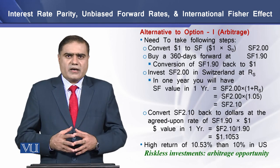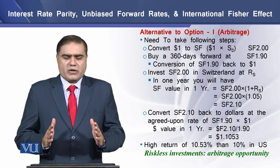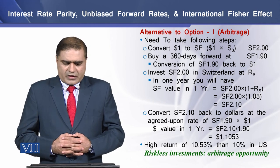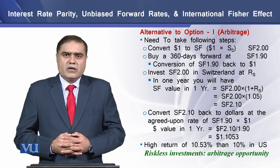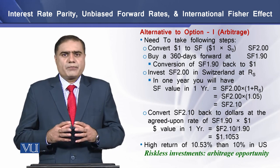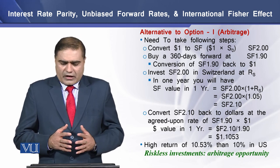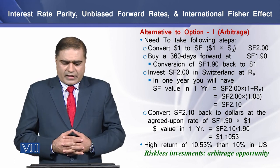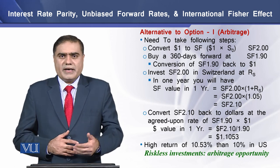As a second alternative, we have an arbitrage opportunity. Let's see how this arbitrage process works. First, we convert $1 into Swiss francs at the spot rate of 2, giving us 2 Swiss francs. At the same time, we enter into a forward contract of 360 days at 1.90 Swiss francs, because we need to convert our Swiss francs back into US dollars at the end of the period.